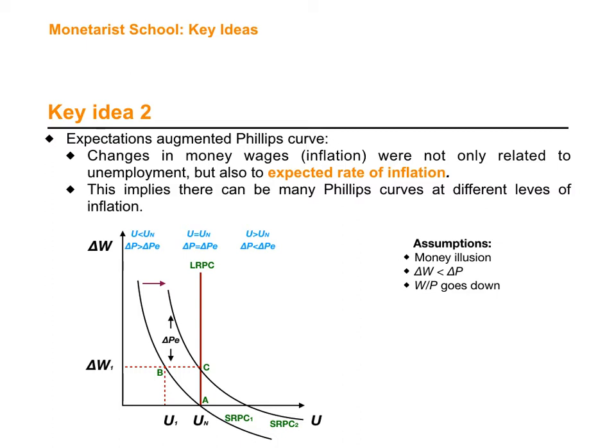So if this happens, the real wage is going to go down, and when real wages go down, companies are going to hire more workers because it is less costly to hire them. Unemployment is going to go down from point A to point B. At point B we have higher inflation and higher money wages, but less unemployment. So there is a trade-off between inflation and unemployment in the very short term. But as time passes, workers are going to notice that prices of products have increased but their wages didn't increase as much.